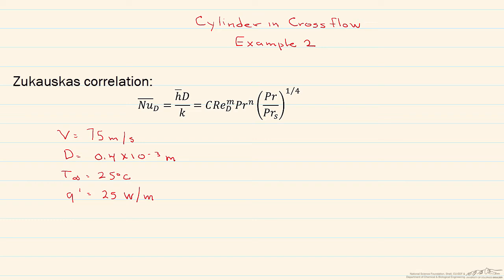The diameter of our wire is 0.4 times 10 to the minus 3 meters. We also have our bulk temperature of the air, which is equal to 25 degrees C. And we have our heat transfer rate from the wire to the air per unit length, and that's going to equal 25 watts per meter.